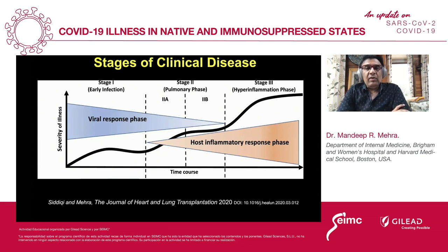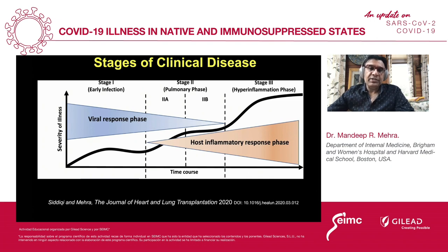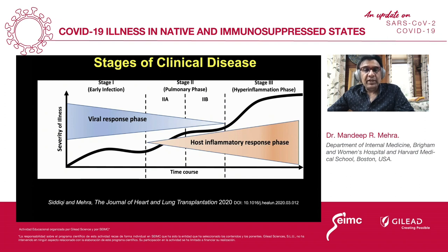The way in which I have been conceptualizing the syndrome of COVID-19 is to think of it in terms of stages of clinical disease. As I have curated the literature, it has become very clear that there are three very clear and distinct stages: the first stage of early infection, the second stage which is a pulmonary phase, and the third, a phase of hyperinflammation.